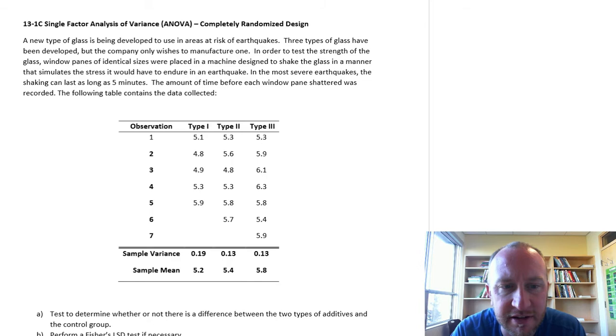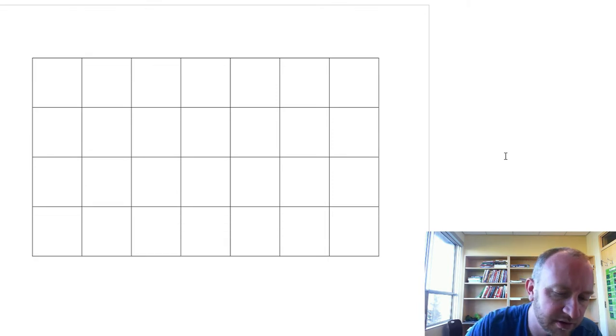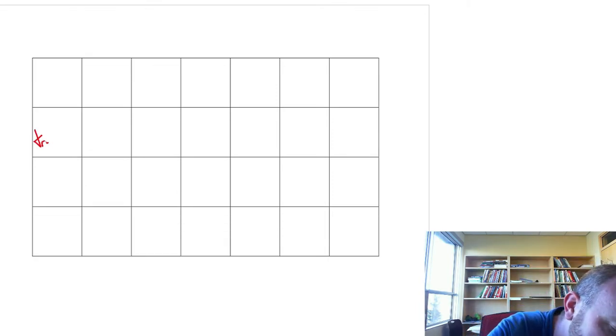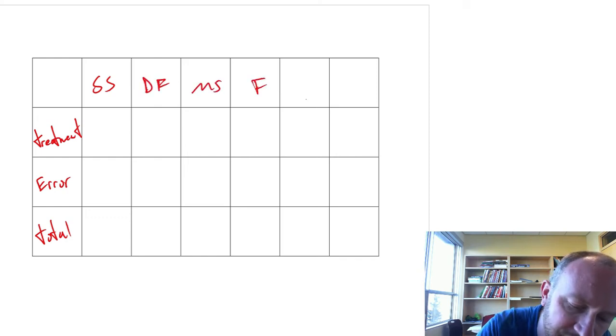We have our variances and we have our sampling means. Let's get into our ANOVA here. So this is going to be treatment, error, and total, sum of squares, degrees of freedom, mean square, F, P, and critical F. Let's just do alpha 0.05.